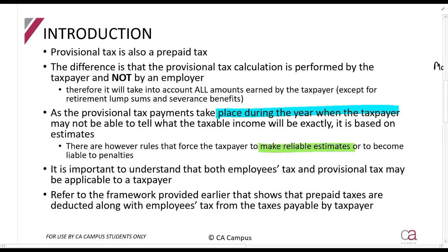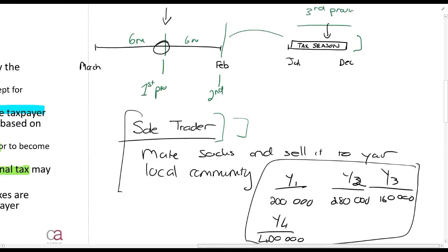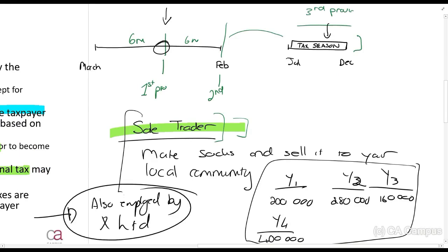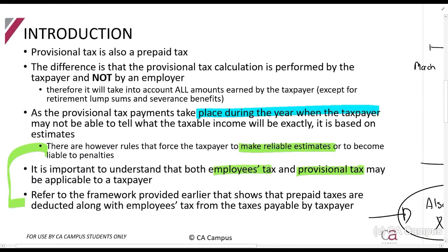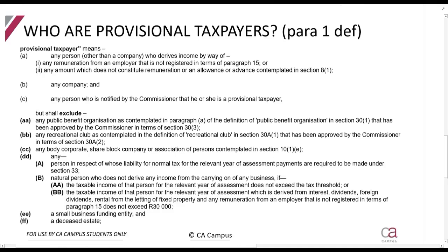It is also very important to understand that you might be in a situation where you pay both employees tax and provisional tax. For example, this sole trader — let's say they are also employed by X Limited. X Limited will withhold employees tax, and because they're a sole trader they also have to calculate provisional tax. It is possible to be subject to both. It does not mean you're paying extra taxes — they still take each other into account.